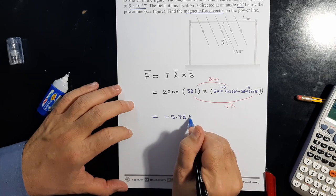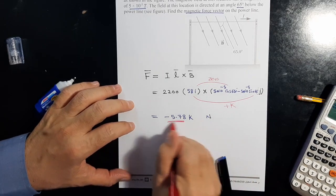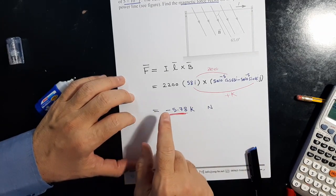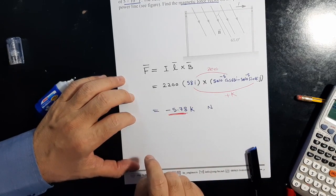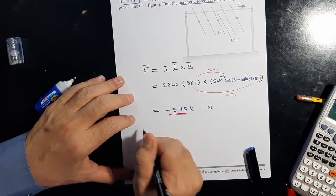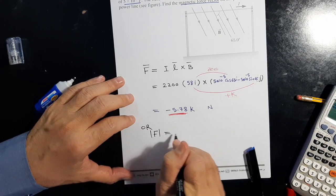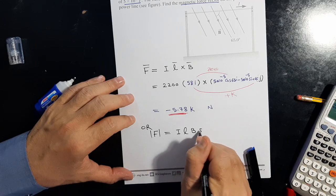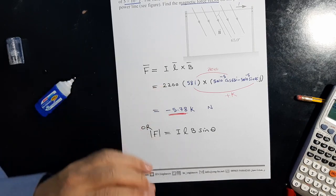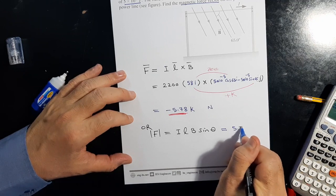If we want to calculate the magnitude, F would be in the minus j direction. The magnitude is F equals I L B. Same values: same I, same L, same B, same sine angle. We get the same answer: 5.38 newtons.